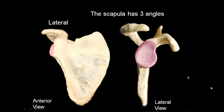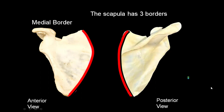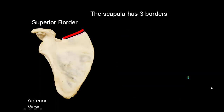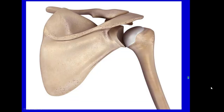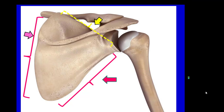The three borders of the scapula are: medial border, which lies between the superior and inferior angles; lateral border, which lies between the lateral and inferior angles; and superior border, which lies between the lateral and superior angles. The lateral border is thick, the medial border is thin, and the superior border is notched.